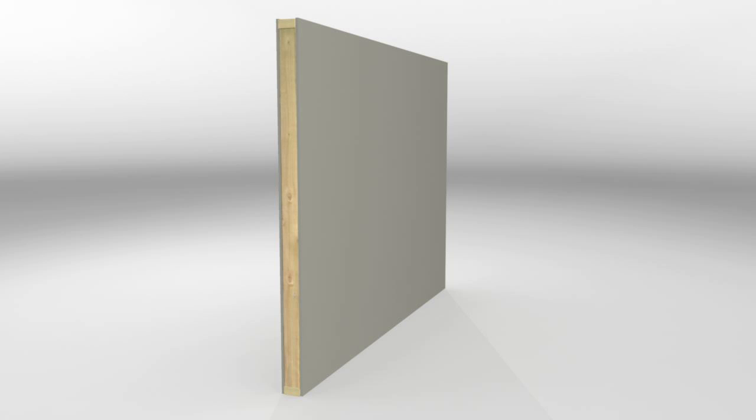So, what about results? A typical interior wall consists of half-inch drywall on each side of wood studs with insulation. This has an STC of about 43.